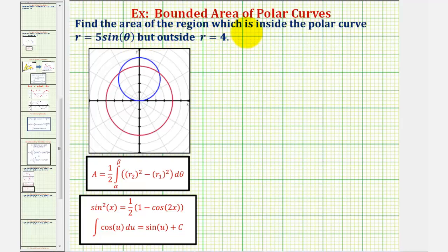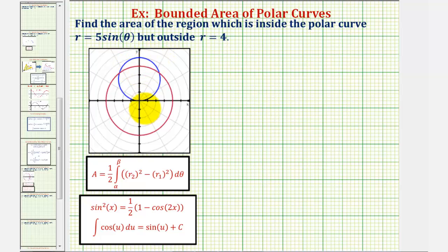We want to find the area of the region which is inside the polar curve given by r equals five sine theta, graphed here in blue, but outside r equals four, graphed here in red. In this problem we're given the graphs of the two curves — if we weren't, we'd have to create these using technology or make a table of values to sketch the curves. Our goal is to find the area that's inside the blue circle but outside the red circle.